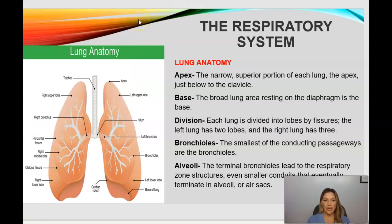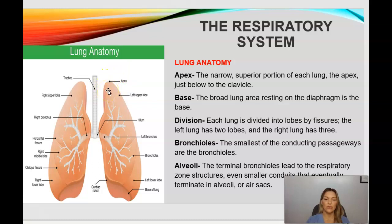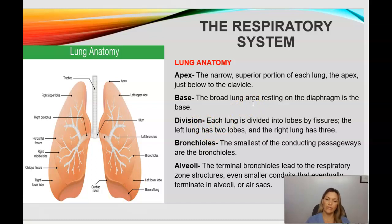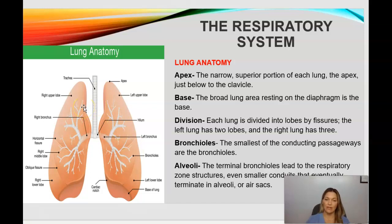Here is a diagram of lung anatomy. At the top is the apex of the lung, located just below the clavicle bone. At the bottom is the base of the lung, which rests on the diaphragm. Each lung is divided into lobes by fissures. The left lung has two lobes and the right lung has three lobes — the left lung only has two lobes because it needs to make room for the heart, which is on the left side.